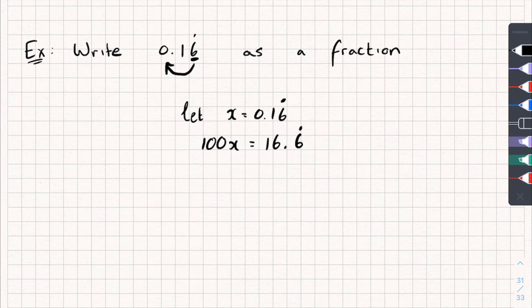Now, you could try it for yourself. But if I subtracted x from 100x, the recurring part of the decimal is still going to be there. I haven't eliminated it. And that's what I want to do. I want to make it just an integer. I want to make it a whole number.